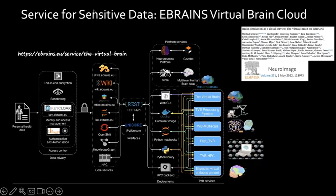There are connections to Gazebo, the neuro-robotics platform, and to the multi-level human brain atlas via the Siibra toolbox, which is also part of eBrains. All of this is connected via RESTful APIs, creating a microservice ecosystem for containerized services to interact and work together in a non-linear fashion — not a linear programming control flow, but an ecosystem of services that can work together.